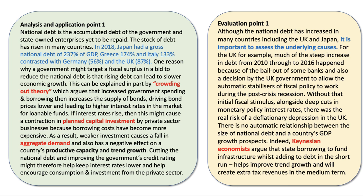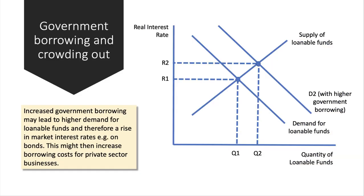Without that stimulus — without allowing that to happen alongside interest rate cuts — there was a significant genuine risk of a deflationary depression in the UK, so that was avoided. And there's no automatic relationship between the size of debt and a country's GDP growth prospects. State borrowing to fund infrastructure, for example, whilst adding to debt in the short term, helps improve trend growth and will therefore create tax revenues in the medium term.